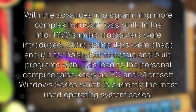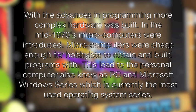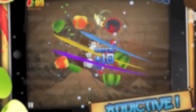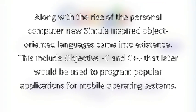With the advances in programming, complex hardware was built in the 1970s. Microcomputers were introduced, which were cheap enough for home users to obtain and build programs with. This led to the personal computer, also known as the PC, and the Microsoft Windows series, which is currently the most used operating system series.